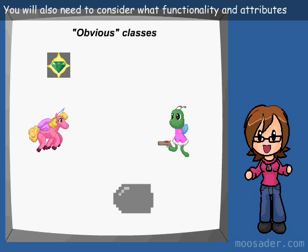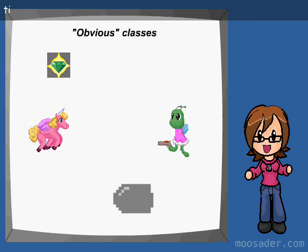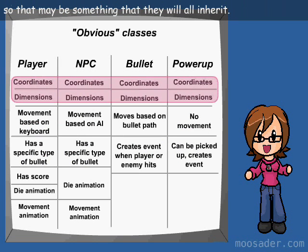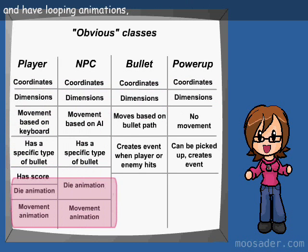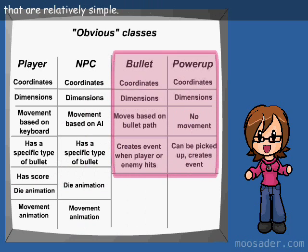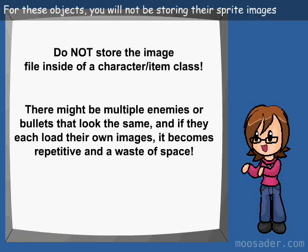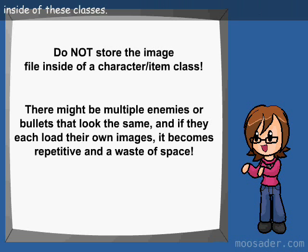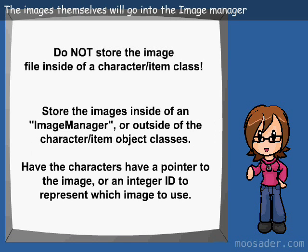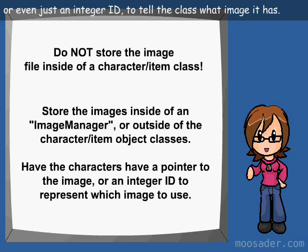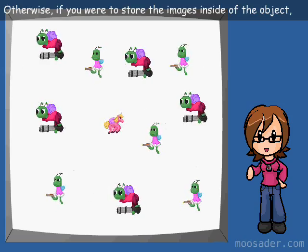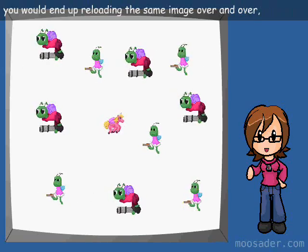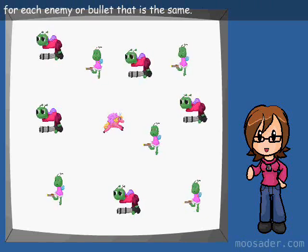The input class will check to see if a user is hitting a key each cycle, and decide what other classes need to handle the action. The timer class will regulate the game's frame rate, so that it doesn't run really fast on new computers and really slow on old ones. You will also need to consider what functionality and attributes all of these objects might have in common, to figure out what their parent object should be. All of these objects will have coordinates and dimensions, so that may be something they will all inherit. You will not be storing sprite images inside of these classes — the images themselves will go into the image manager, and you will have something like an image pointer or even just an integer ID to tell the class what image it has. Otherwise, you would end up reloading the same image over and over for each enemy or bullet that is the same.